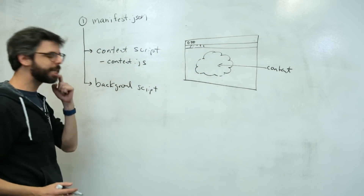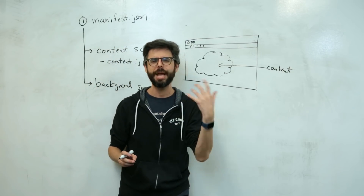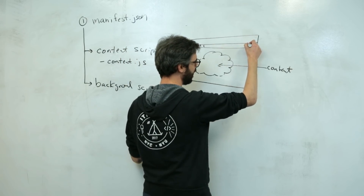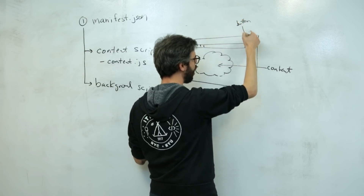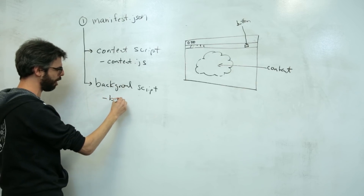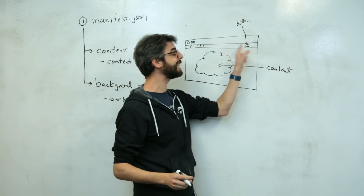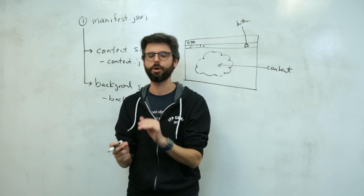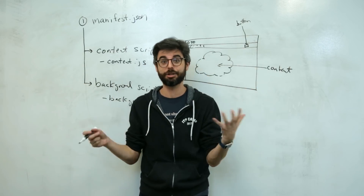One of the things I can do in a background script is I can listen for things called a browser action. There's also a page action, and there's all sorts of kinds of events. A browser action is a way of listening — for example, I can add a button to the menu bar with my own design, and I can listen in the background script, which I'm going to call background.js. I can listen for when the user has clicked that button, and then I can make something happen on the web page, or within Chrome, like close all the tabs. Lots of things are possible.